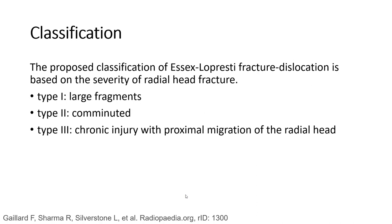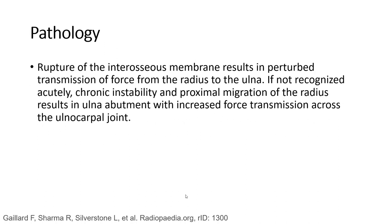The classification of the Essex-Lopresti fracture dislocation includes: Type 1, which is a simple fracture; Type 2, comminuted; and Type 3, a chronic injury with proximal migration of the radial head, which may indicate the need for prosthetic replacement.